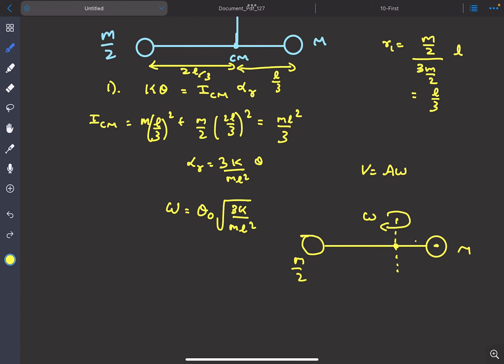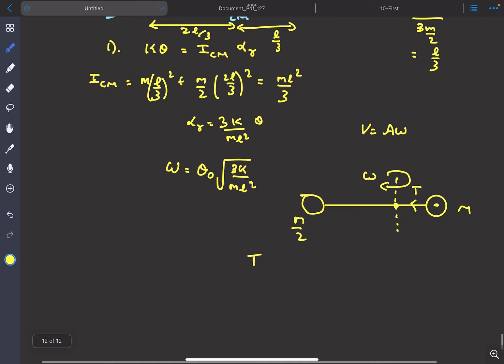If you look at the mass m, the tension T by the rod is providing the required centripetal acceleration for this m to move around in this circle. So we can write the tension T to be equal to m times L/3 times ω². So if you solve this, you'll get the answer to be kθ₀²/L.